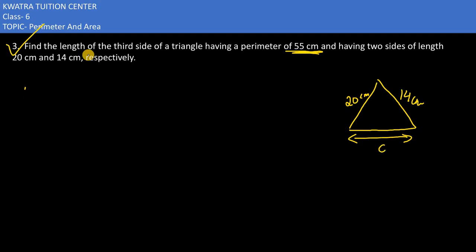Now let's take care of the perimeter of the triangle. Perimeter of the triangle is nothing but sum of all sides. Now how much of the perimeter is mentioned? It is 55. On the right side we have sum of all sides.